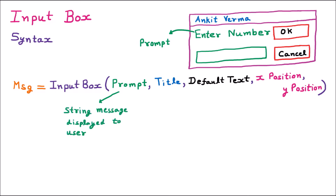The next parameter is the title. Whenever we show an input box, we display a certain message at the top — that is the title, which is the string displayed in the title bar. The top bar of the input box is called the title bar. The next parameter is the default text. If the user does not enter any text and simply presses OK or Cancel, there should be some default value — that is called the default text.